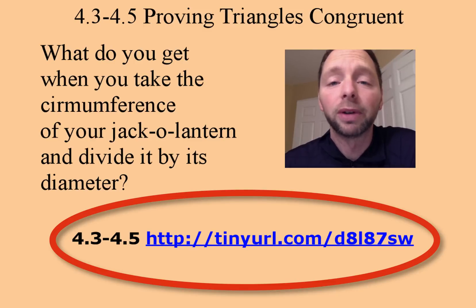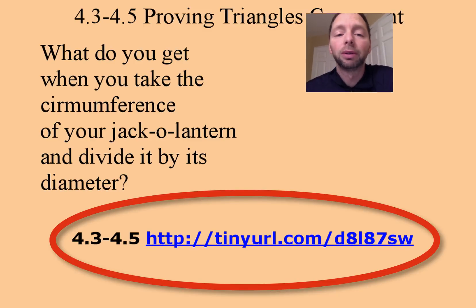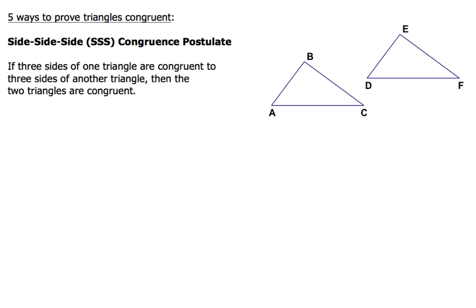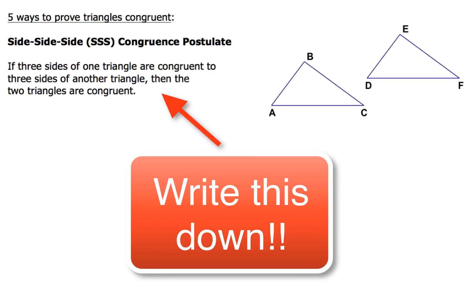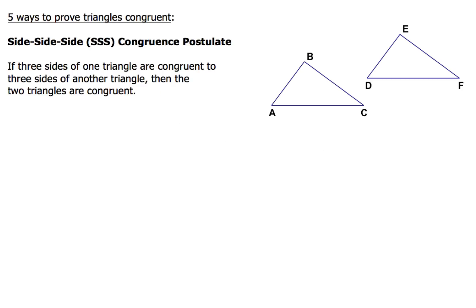Let's take a look at our very first triangle congruence postulate. There are five different ways, and the first one is going to be the side-side-side congruence postulate. It says: if three sides of one triangle are congruent to three sides of another triangle, then the two triangles are congruent.